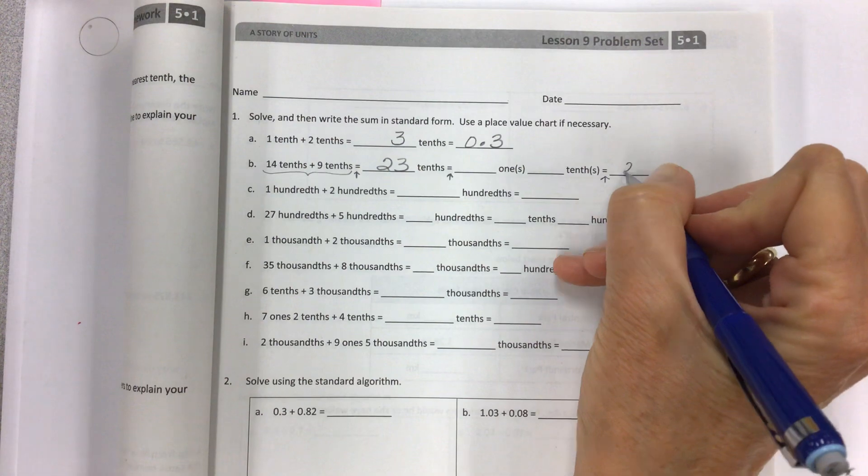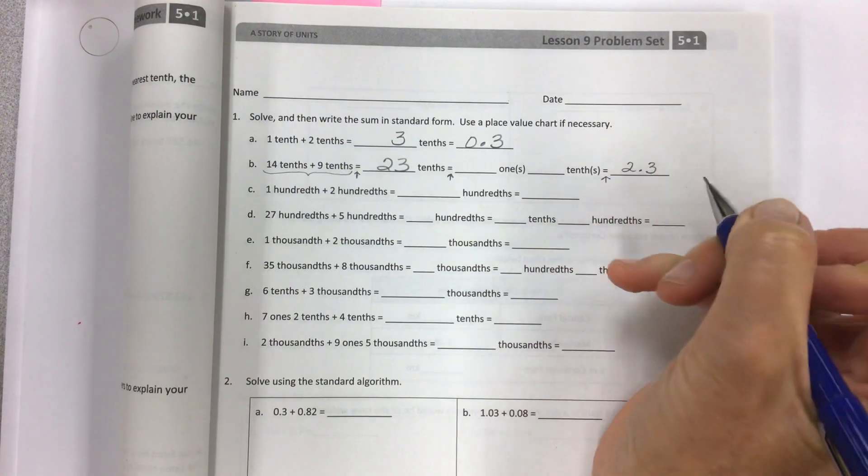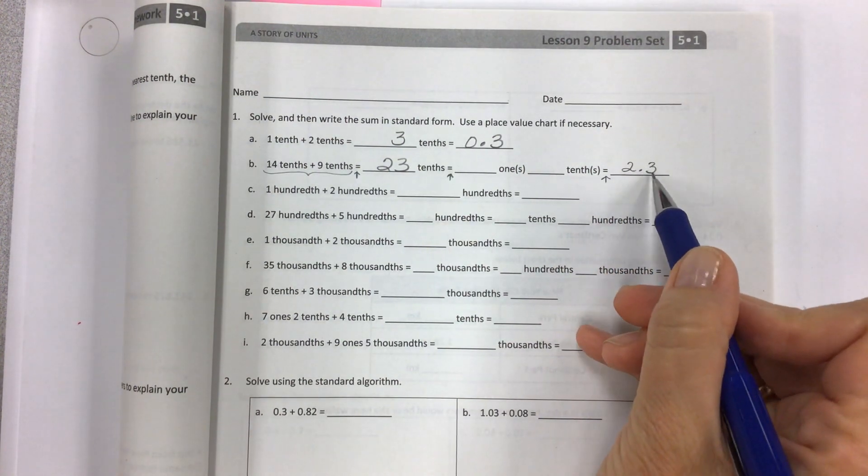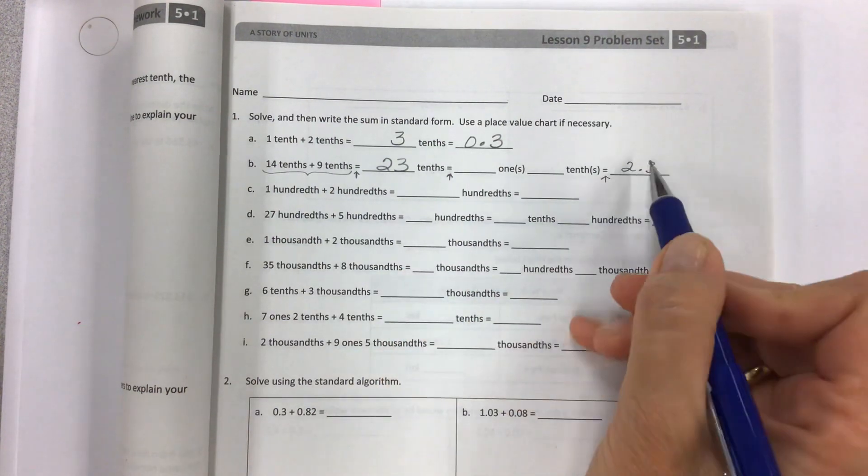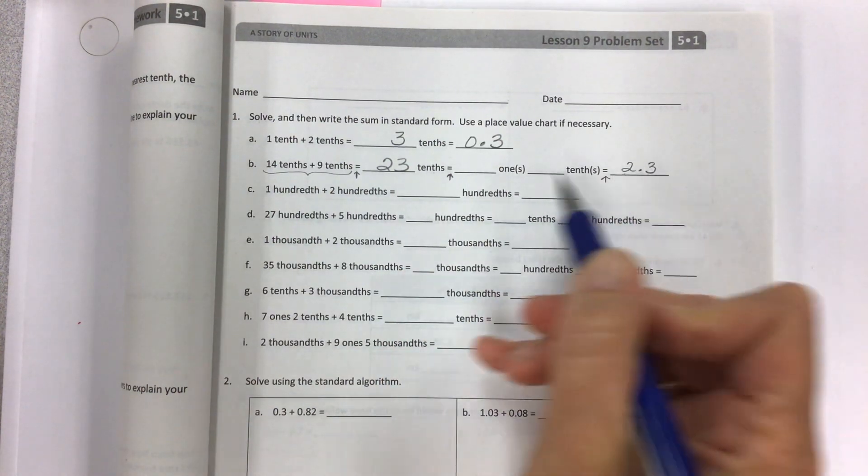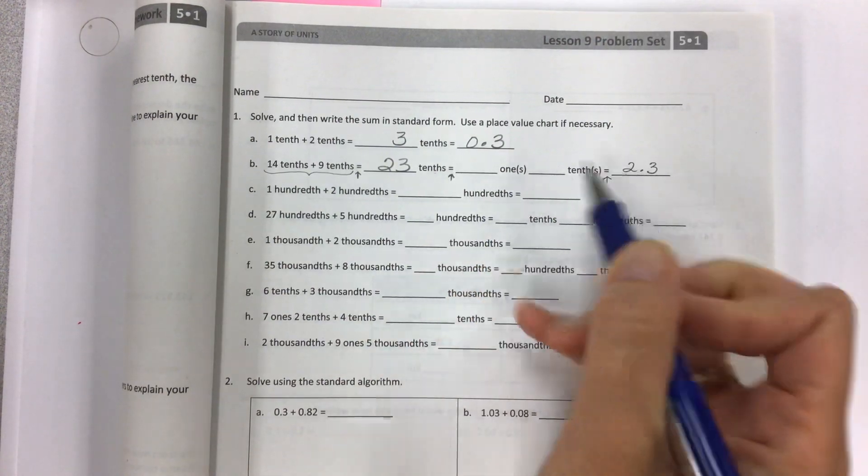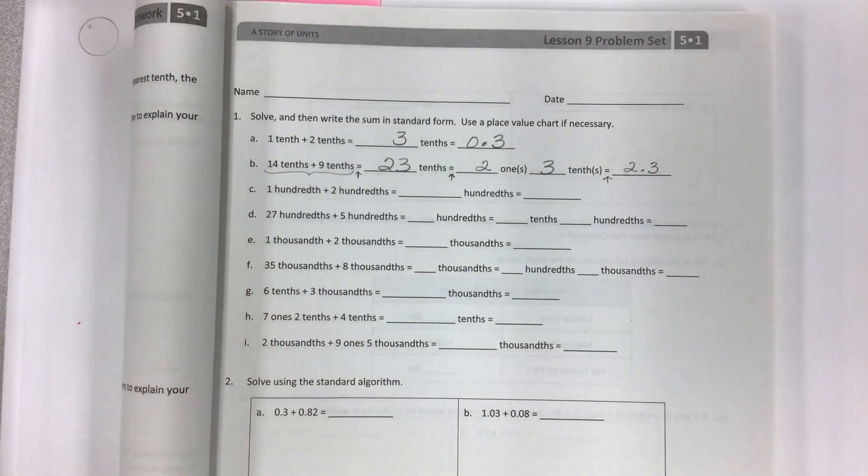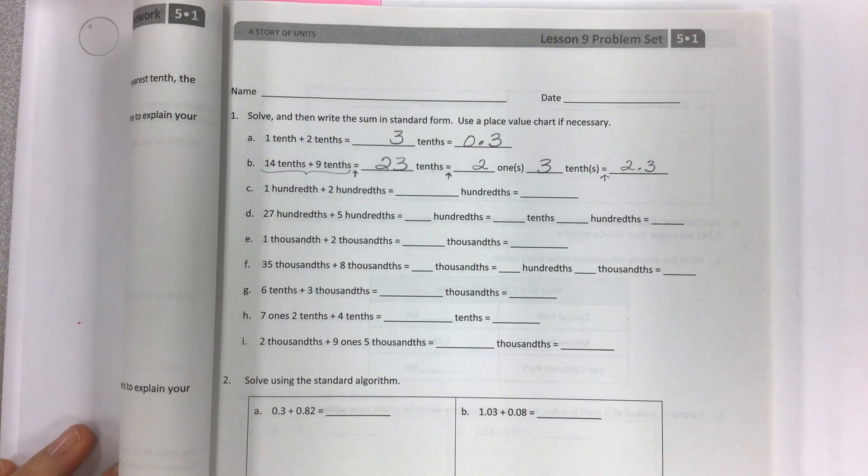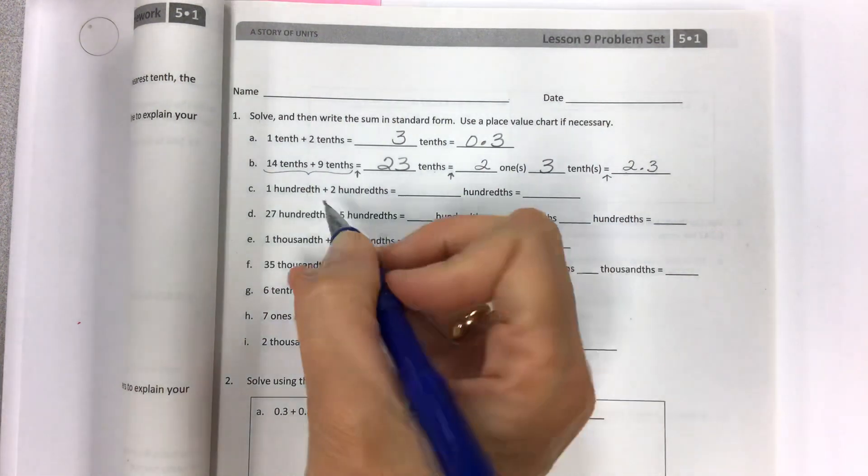If it's 23 tenths, what's that gonna look like when we get down here to our standard form answer? That is 2.3 or 2 and 3 tenths. Remember the renaming: 23 tenths looks like 2 ones and 3 tenths. That's what this whole section is all about—understanding the unit form and how we can apply this to addition before we get to the standard algorithm.